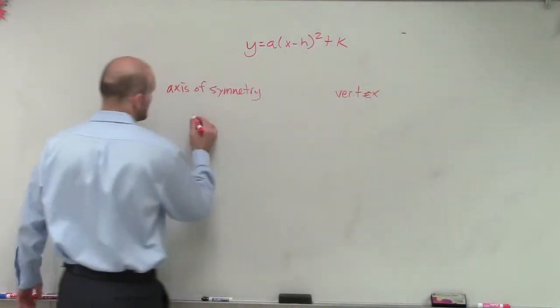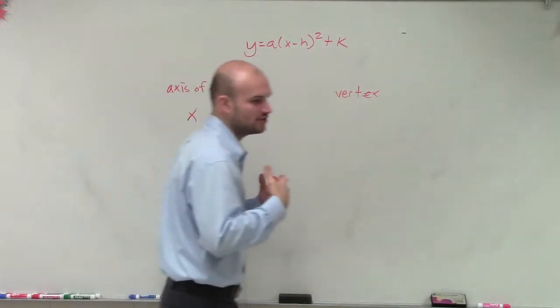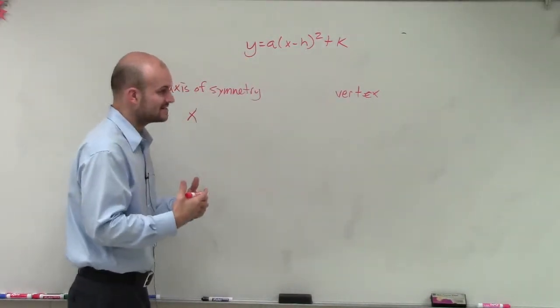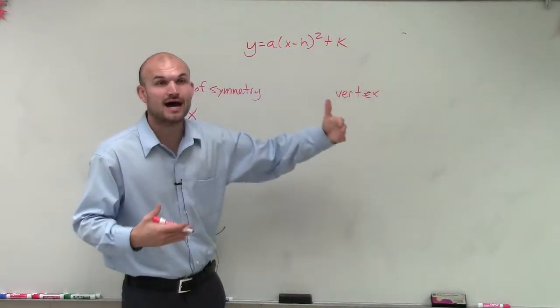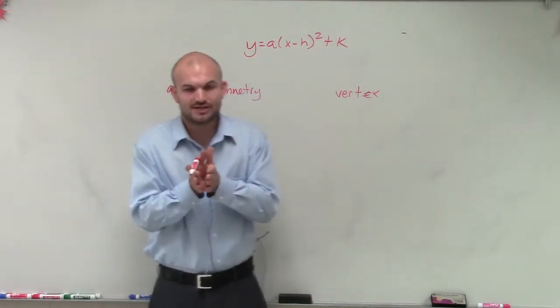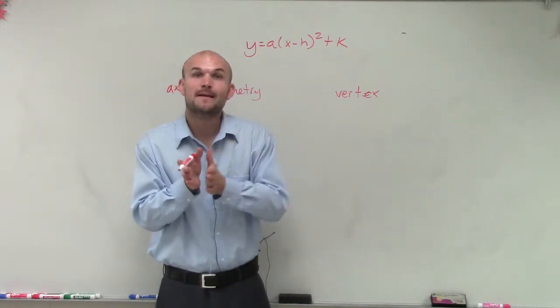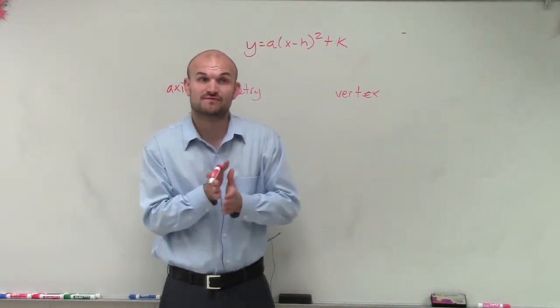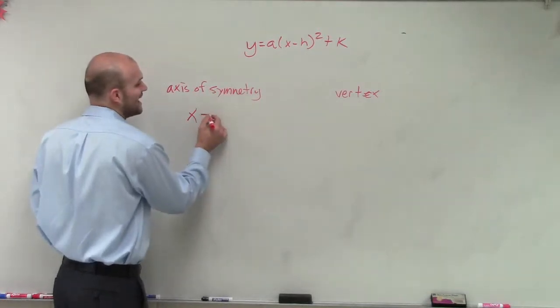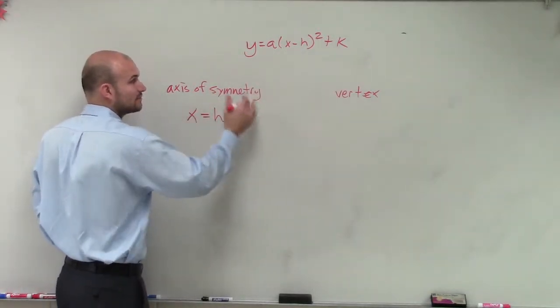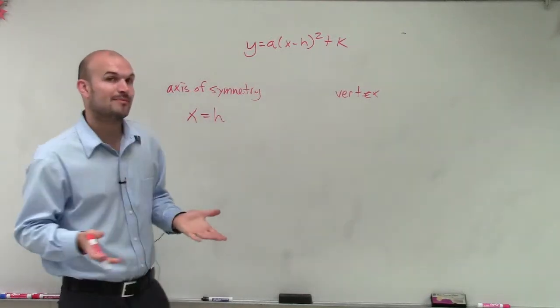And I'll show you why. So first of all, remember our h? That told us where to shift our graph left or right. So if we started at 0 and then I added a number, we start at 0 with our parabola. That's our axis of symmetry is 0. So if I shift left to right, my axis of symmetry is now going to shift left to right. So therefore, x equals h is my axis of symmetry. Whatever I'm doing for shifting left to right, that's going to be my axis of symmetry.